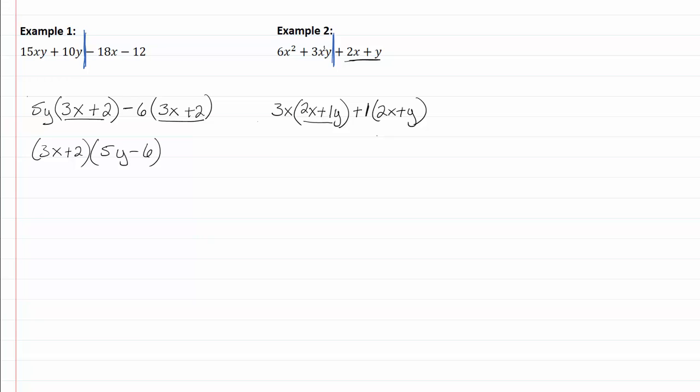So I take out my binomial common factor of 2x plus y, and that's going to leave me with 3x plus 1. I have to have that 1, or otherwise if I foil it back out to check my answer, I will not get this for my answer. So we're done.